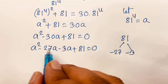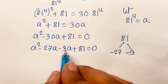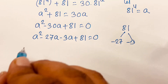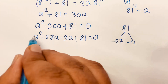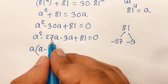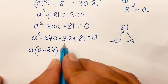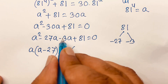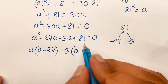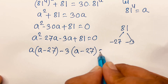And minus 27a minus 3a equals minus 30a. Then a is common: a squared divided by a is a, minus 27a divided by a is 27. Then 3 is common: a minus 27, and 81 divided by 3 is 27, is equal to 0.